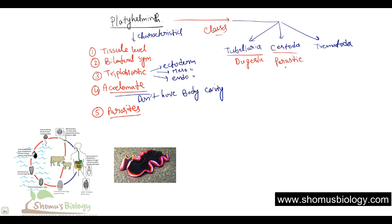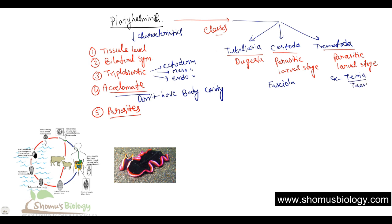Cestoda are parasitic and they also have a larval stage involved in their development. The example is Fasciola, a very common worm. The third type, Trematoda, is also parasitic and also has a larval stage — this is common for both Cestoda and Trematoda. The example is Taenia — Taenia solium — the example of the flatworm.